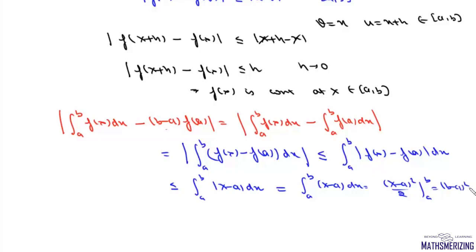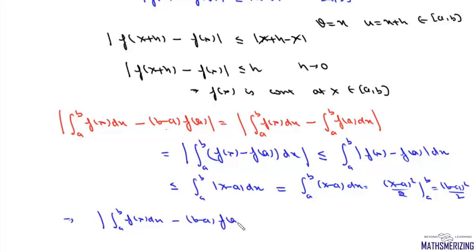This gives us (b - a)²/2. Therefore, |∫[a to b] f(x)dx - (b - a)f(a)| ≤ (b - a)²/2, which is what we needed to prove.